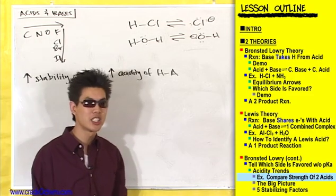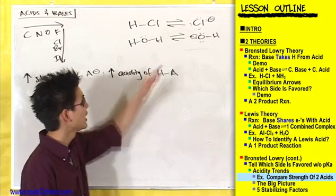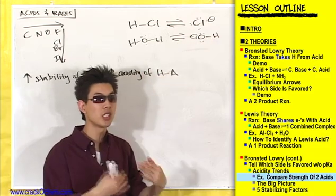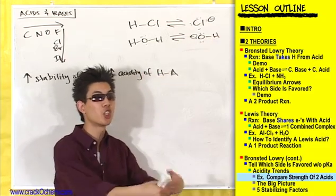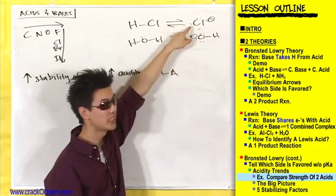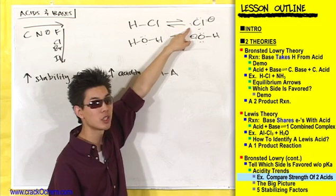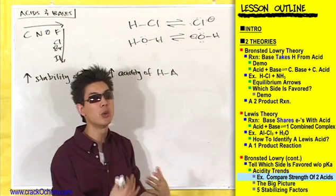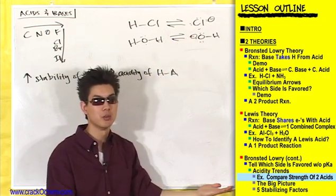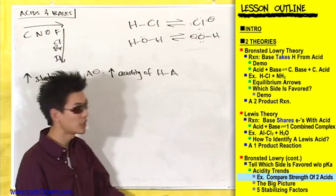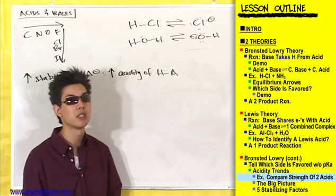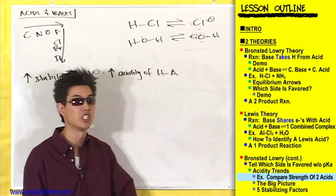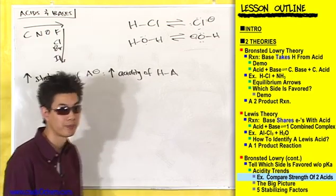This makes sense logically: the more stable you are, the more likely you're going to turn into that Cl minus which is more stable. Because you always favor stability - the more stable your conjugate base, the more likely you're going to give up that hydrogen, and the stronger an acid you are.